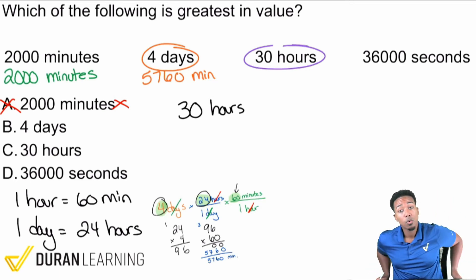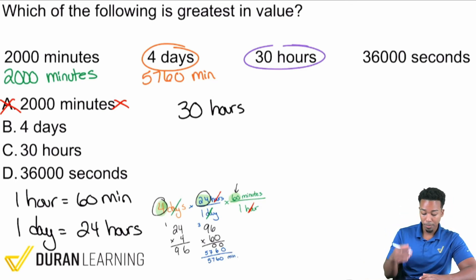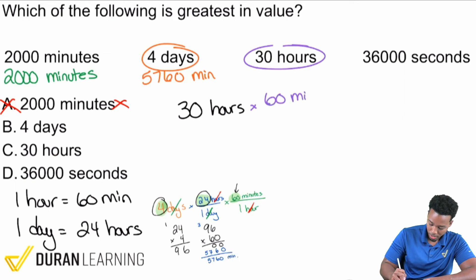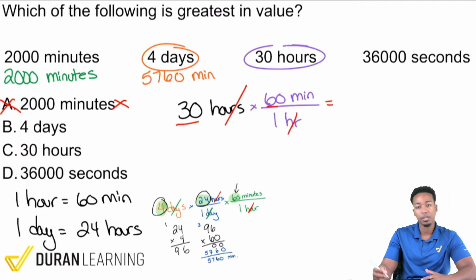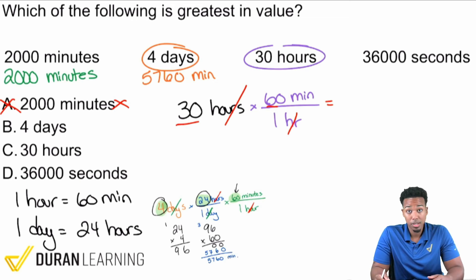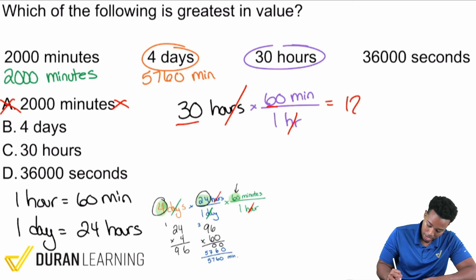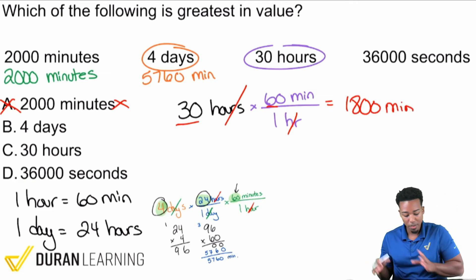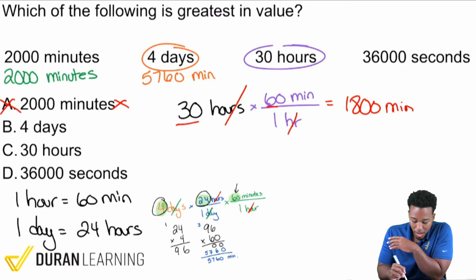60 minutes over one hour, and what we have there: hours cancel out. 30 times 60, what's that going to be? 30 times 60 is 3 times 6, then the zeros from the 30 and 60, put them back in. 3 times 6 is 18, bring those two zeros back: 1,800 minutes.